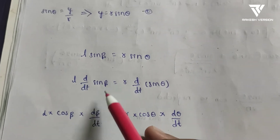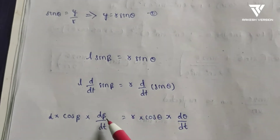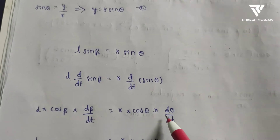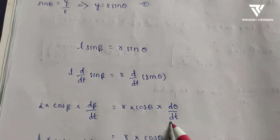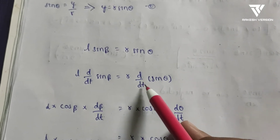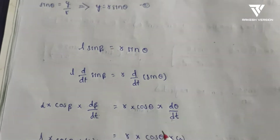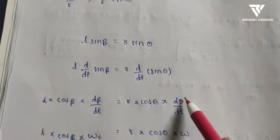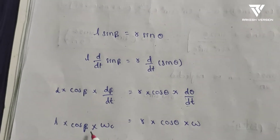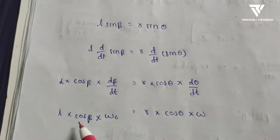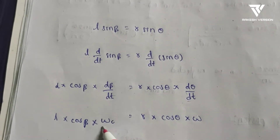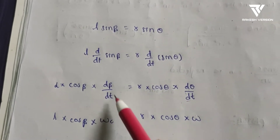We differentiate with respect to time t, so we write dβ/dt and R·cos θ·(dθ/dt). Here dθ/dt is ω (crank angular velocity). So we get L·cos β·ω_c = R·cos θ·ω, where ω_c = dβ/dt is the angular velocity of the connecting rod.